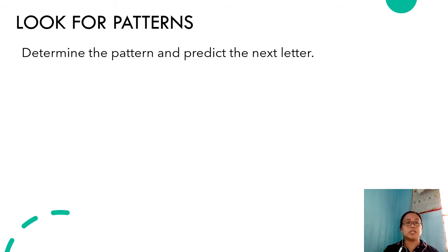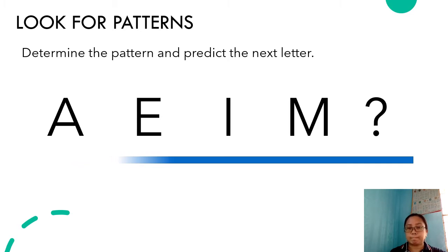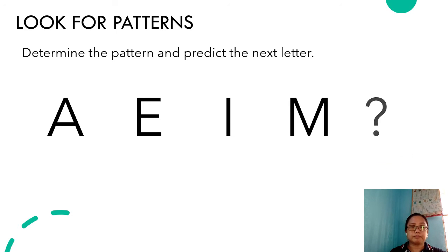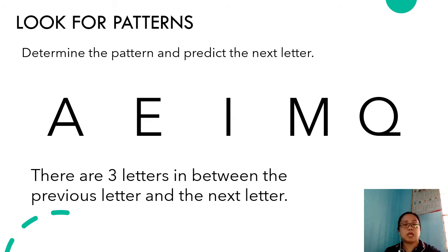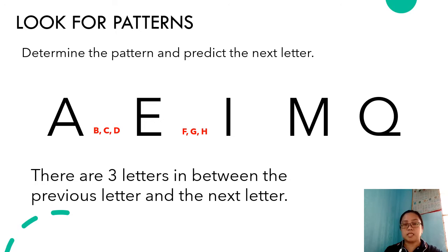Here we have a series of letters. Try to determine the pattern and predict the next letter that comes after the letter M. You have 10 seconds. The answer is the letter Q. The reason is there are three letters in between each consecutive letter in the series. Between letter A and E, there are the letters B, C, and D. In between the letters E and I, we have the letters F, G, and H.